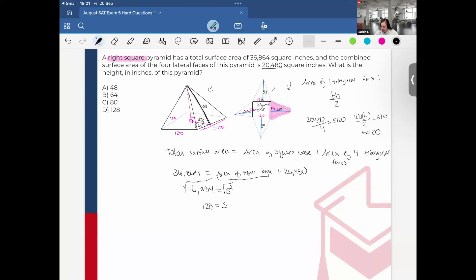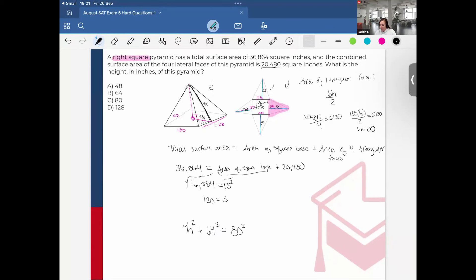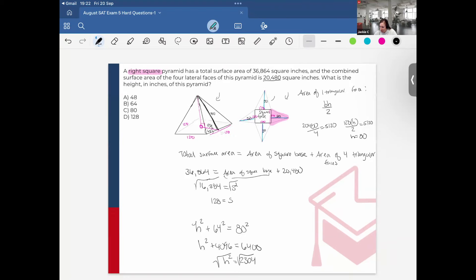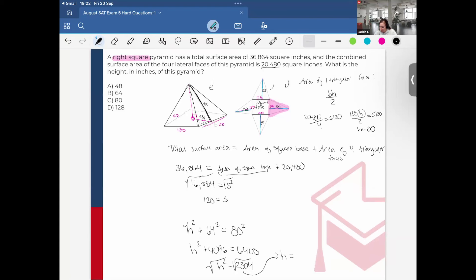Final step, I'm going to say height squared plus 64 squared equals hypotenuse 80 squared. 64 times 64, so height squared plus 4096 equals 6400. Subtract out the 4096 from each side. Height squared equals 2304. Take the square root, and that gives me the height. So height equals 48, and that correlates to option A.